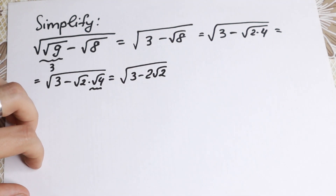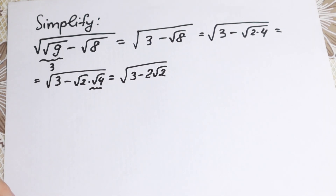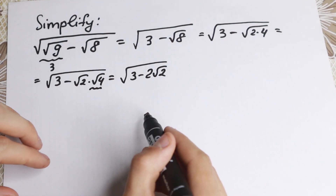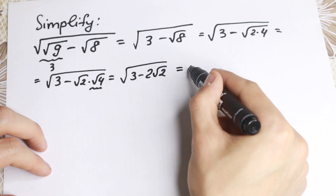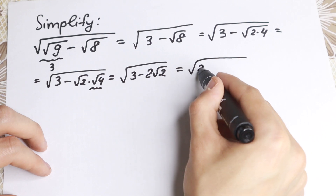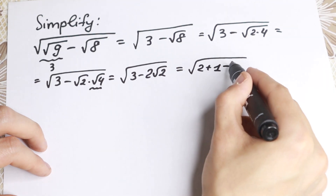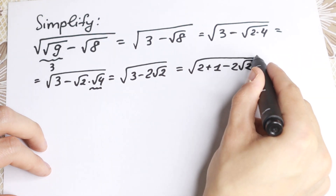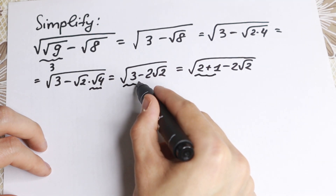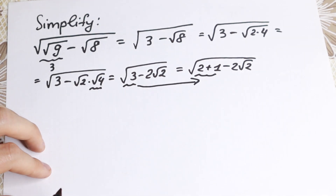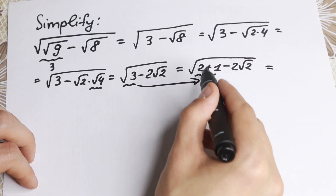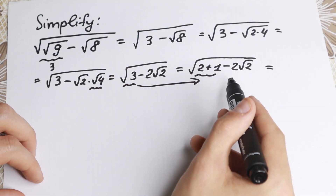We have this expression right now. What about this expression — how can we see a formula here? Take a look closely. We have 3, and we can write this 3 as 2 plus 1. So we have 2 plus 1 minus 2 times square root of 2. Writing 3 as 2 plus 1 is nothing hard — just write it that way.